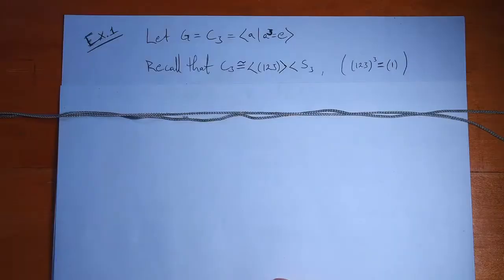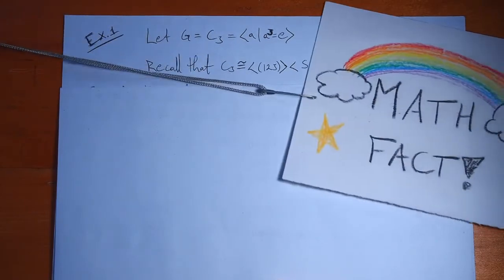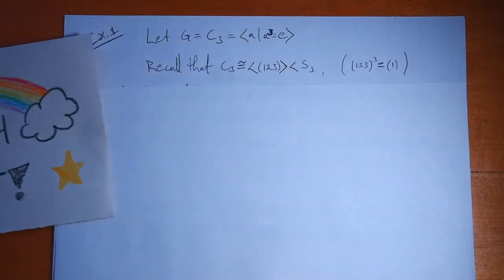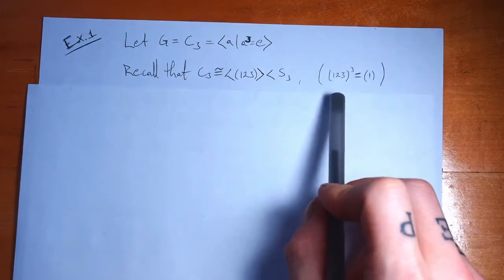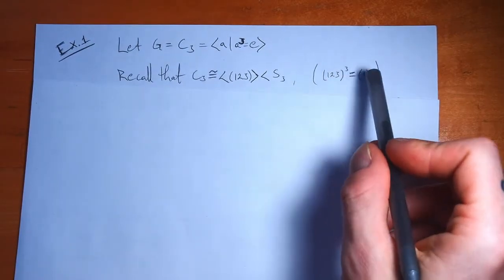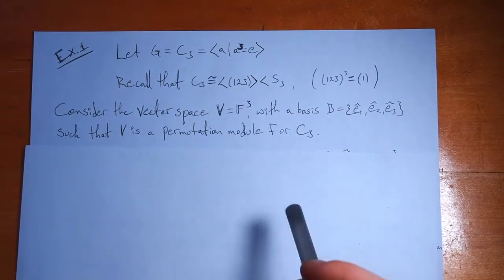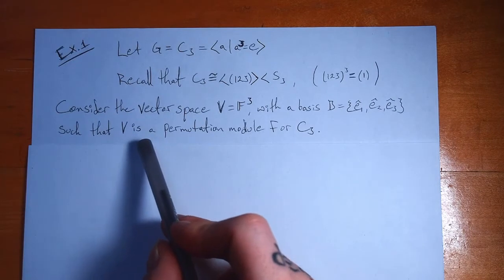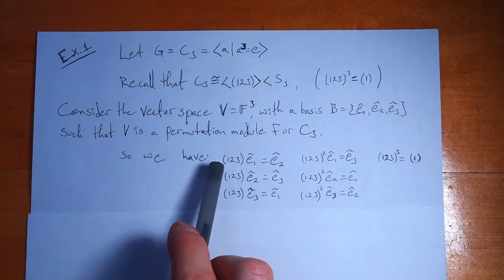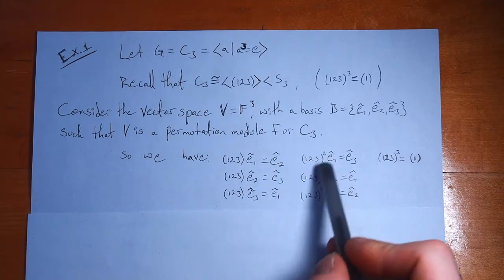Let's see another example. Let G = C_3, the cyclic group with three elements. Recall that C_3 is isomorphic to the group generated by the element (1, 2, 3) in S_3 — so it's a subgroup of S_3. The element (1, 2, 3) does in fact have order 3. Consider the vector space F^3 with natural basis e_1, e_2, e_3, such that V is a permutation module for C_3. The group action just permutes the basis vectors: 1 goes to 2, 2 goes to 3, 3 goes to 1.